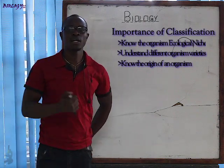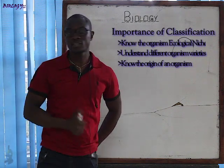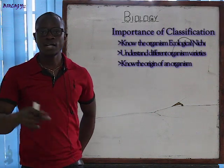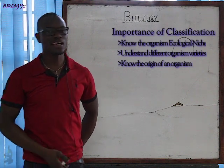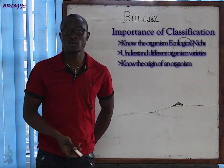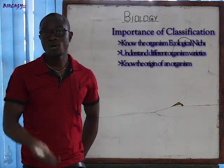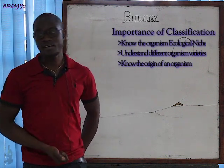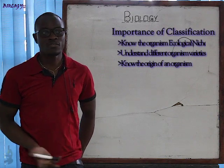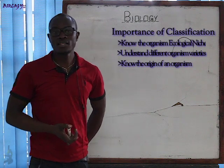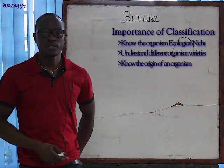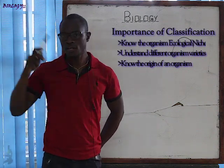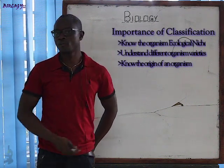Another importance: classification gives us a clear idea of where an organism came from and why it behaves that way. For example, take a lion — a lion does not eat skuma wiki or grass, it eats meat. It is a carnivore. The reason is because its ancestors were carnivores. So even today's lion prefers to eat meat because that is its ancestral origin. Just like a dog — if the dog's ancestor used to run fast, today's dog should also run fast, unless that dog is abnormal.